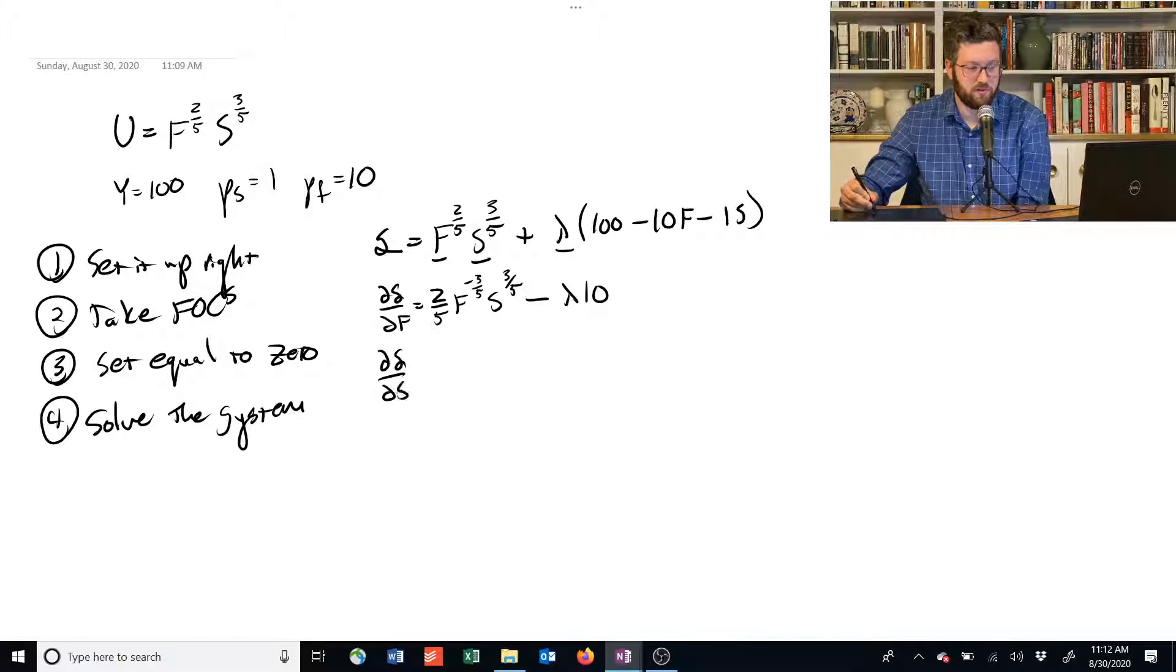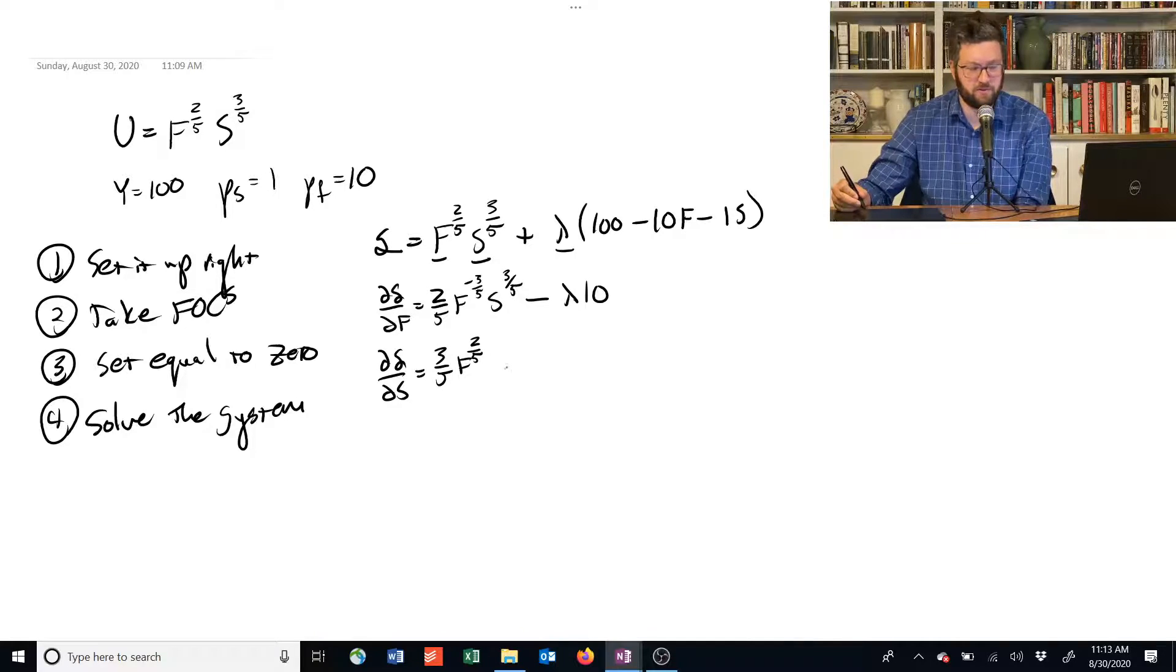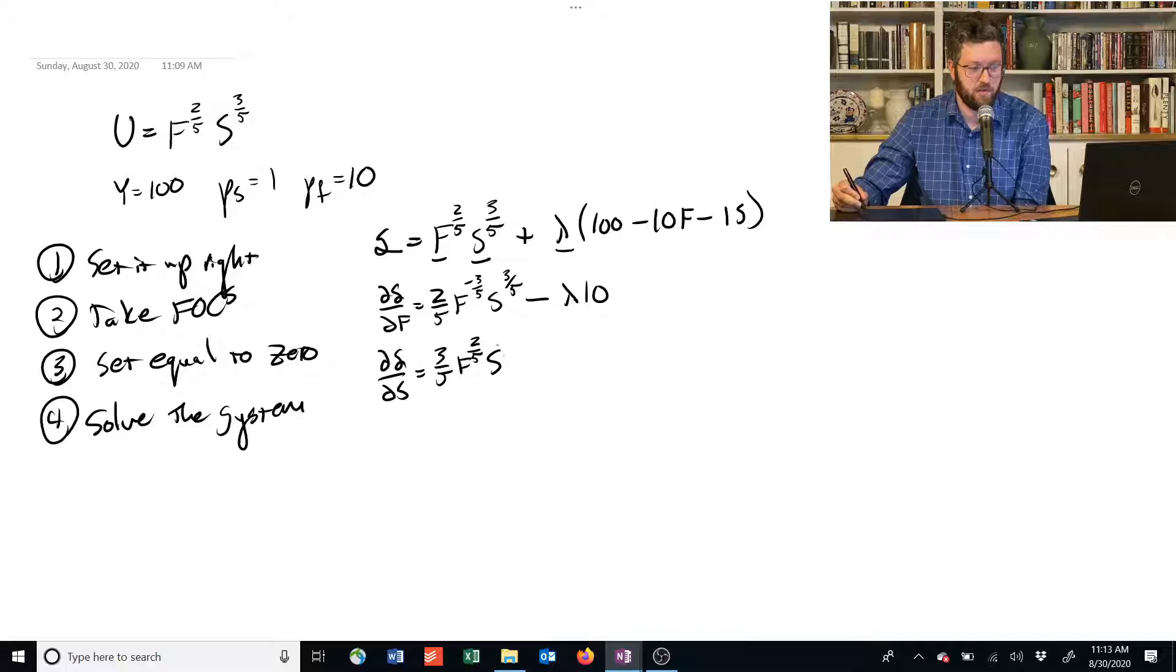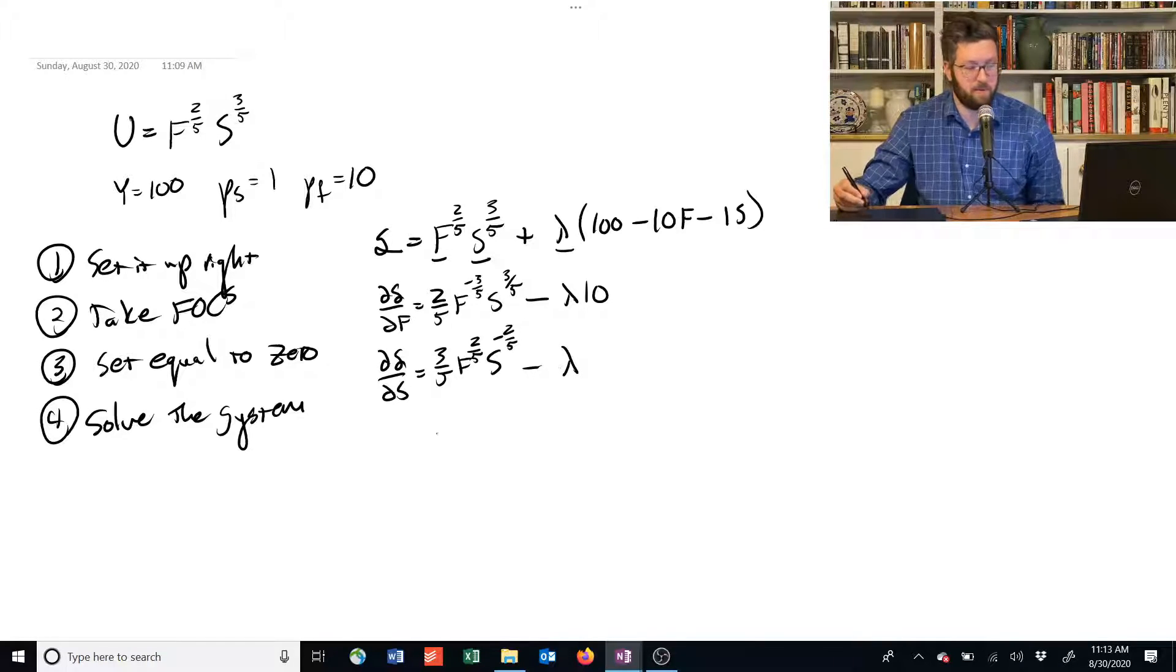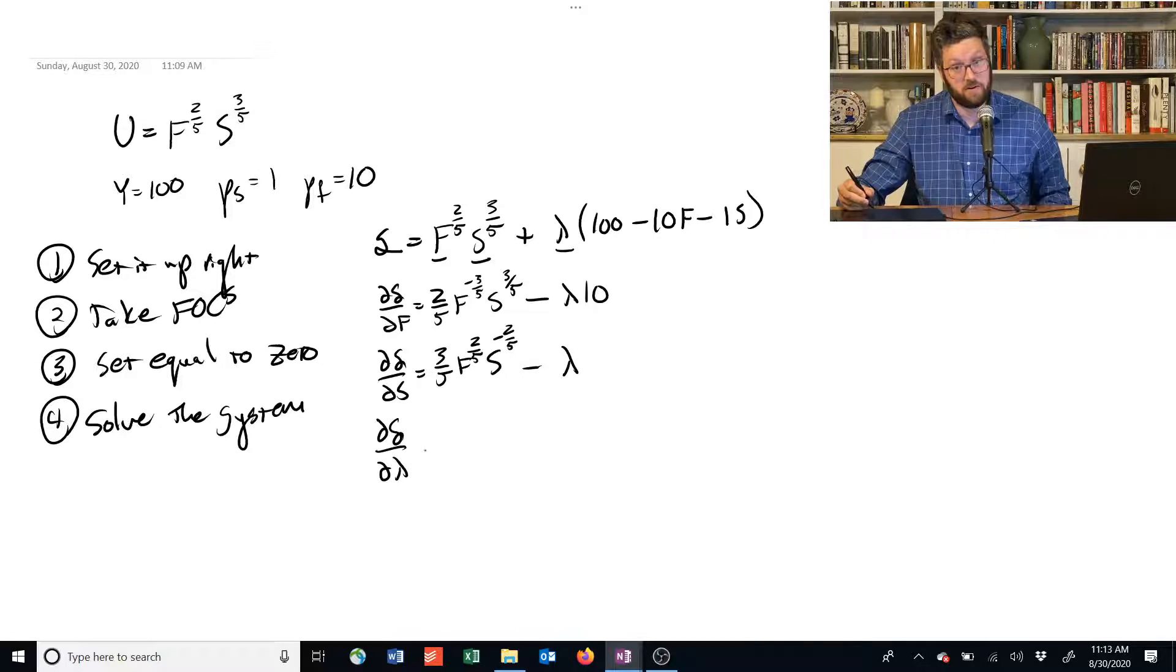The second first-order condition looks like this. We've got a three-fifths on top of that S, so we bring that out front. We leave F alone because it's a partial derivative, so we just treat F like it's some fixed number. We subtract 1 from the three-fifths. That gives us negative two-fifths. We subtract the Lagrange multiplier times S, so minus lambda. Lambda is the Greek name, remember, for that symbol.